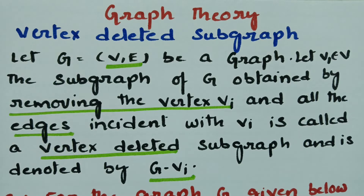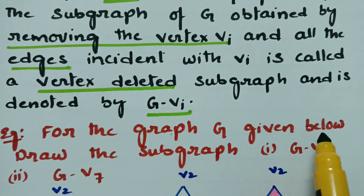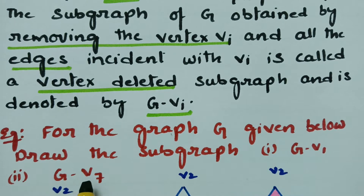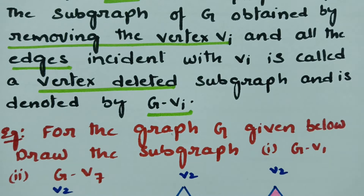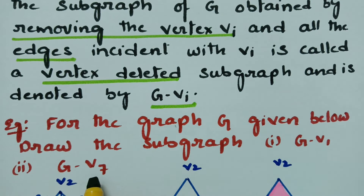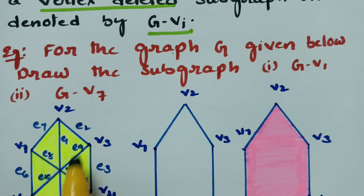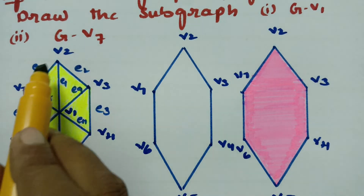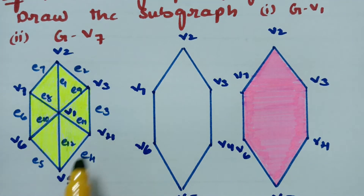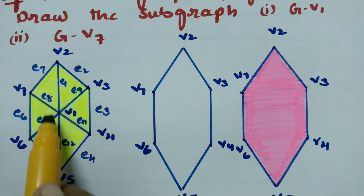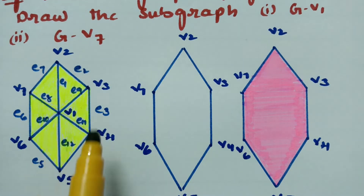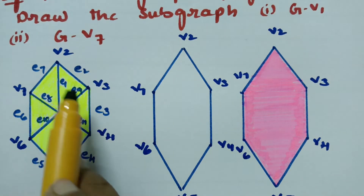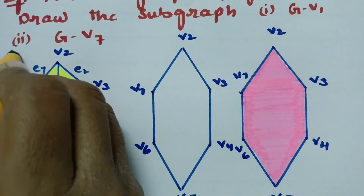Let me explain with an example. For the graph G given below, draw the subgraph G minus V1 and G minus V7, where V1 and V7 are vertices. The main graph has vertices V1, V2, V3, V4, V5, V6, and V7, with edges E1 through E12. So these vertices and edges together make the main graph G.